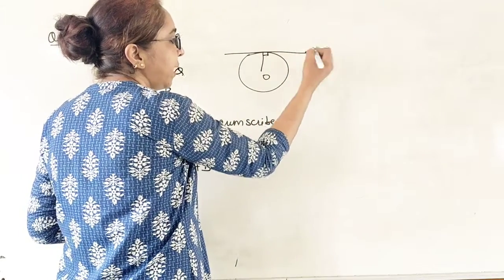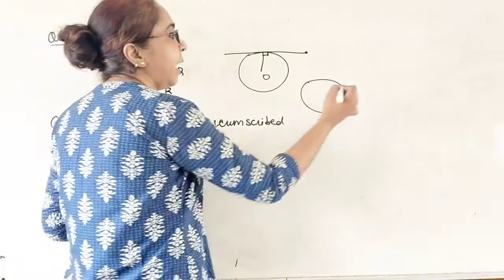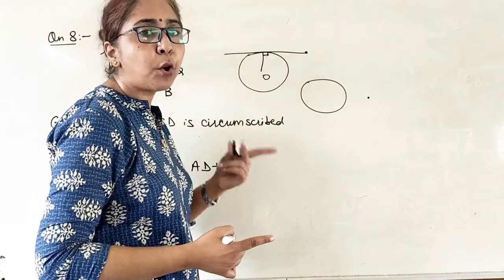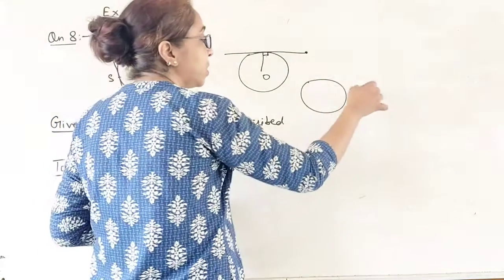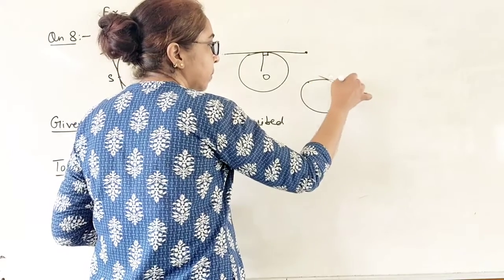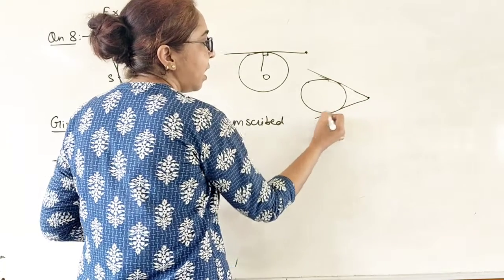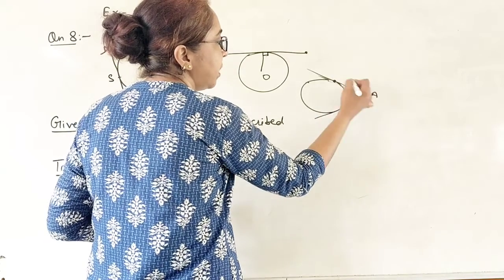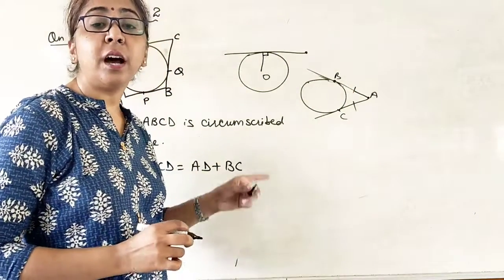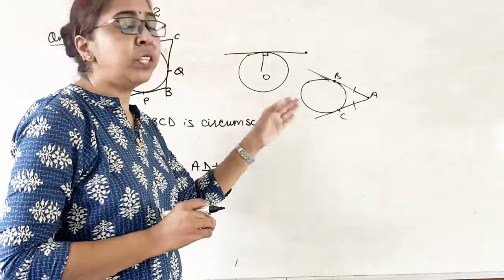And second one, if I draw from any external point, suppose again this is a circle and I have taken this point and from an external point, I can draw two tangents to the circle and the length of these two tangents, that means AB and AC, are always equal. This is our second theorem. For doing this question, you should know about these two theorems.